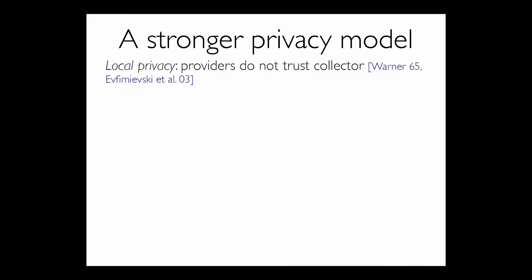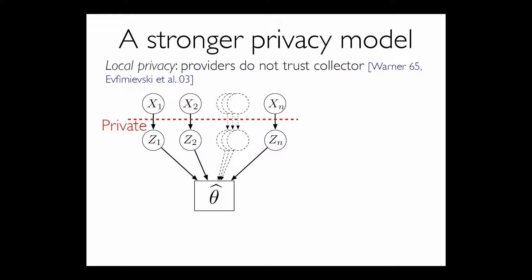So in local privacy, data providers don't trust the collectors of the data. And this is actually an old idea that goes back to work in the 60s on survey sampling, going door to door asking people for information about their habits. And so the game is the following. So I've got my people, x1, x2 through xn, but then before the data goes in to try to compute some estimator or some quantity, I'll just call this theta hat for now. This is my algorithm or statistics box. It turns into some z1 through zn where these are private. So these are some kind of obfuscated version of the original data. And so there's some barrier between me and whatever you, the statistician or machine learner or company or whatever, get to see.